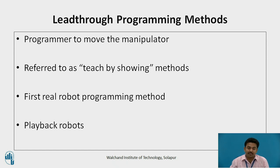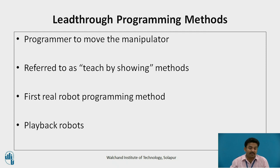Let us move to lead-through programming methods. The lead-through methods require the programmer to move the manipulator through the designed motion path and that the path be committed to memory by the robot controller. The lead-through methods are sometimes referred to as teach-by-showing methods. Chronologically, the lead-through methods represent the first real robot programming method used in industry, in the early 1960s when robots were first being used for industrial applications. Lead-through methods are used to program playback robots.